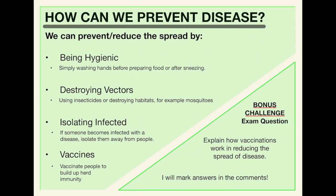So how can we prevent the disease? We can reduce the spread by being hygienic — washing our hands before preparing food or after sneezing. We can destroy the vectors, so we can try to contain or get rid of mosquitoes, for example by using insecticides or destroying habitats. We can isolate infected people away from others — this is something we saw a lot of during COVID-19.